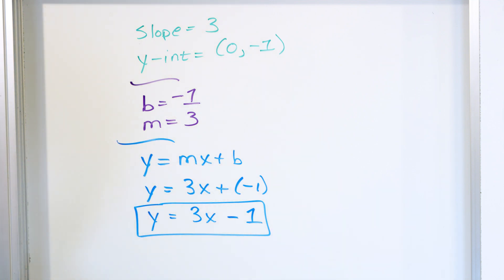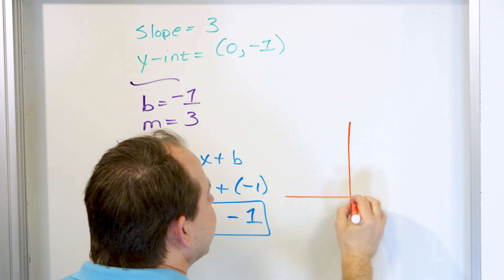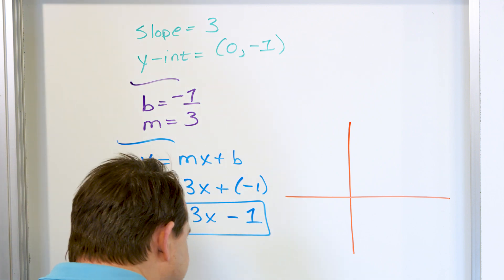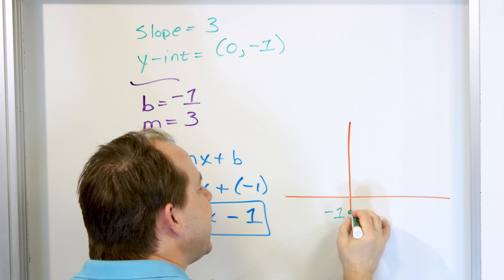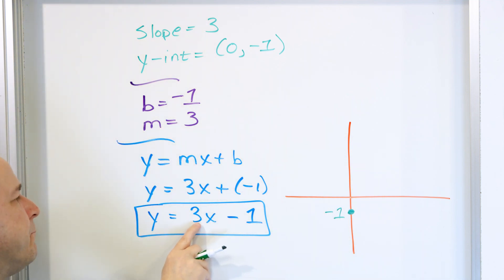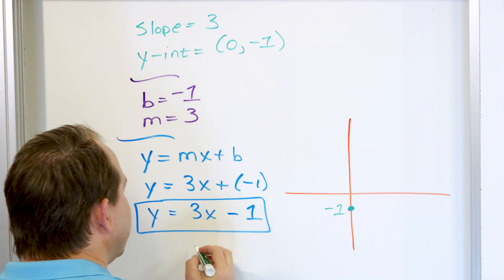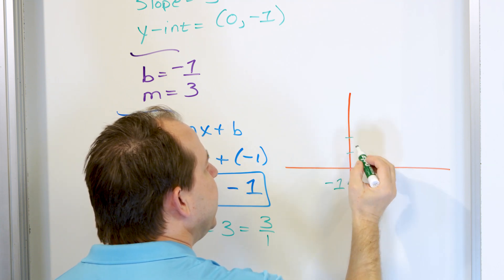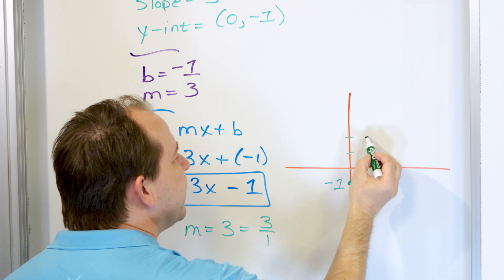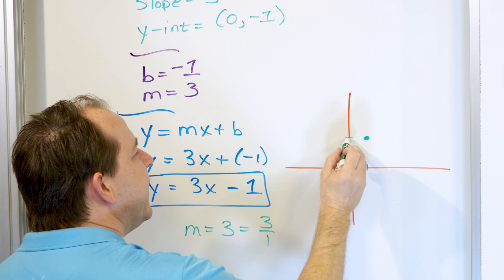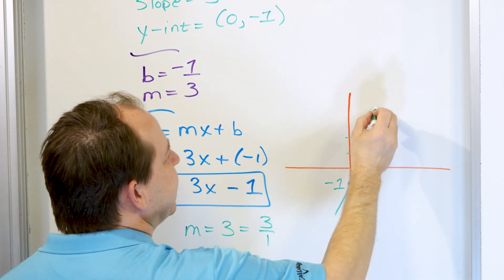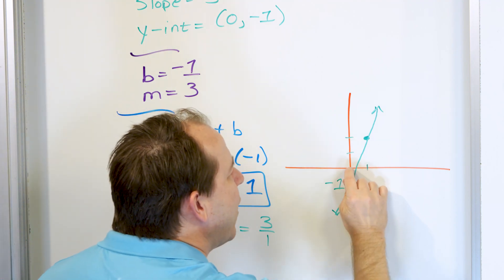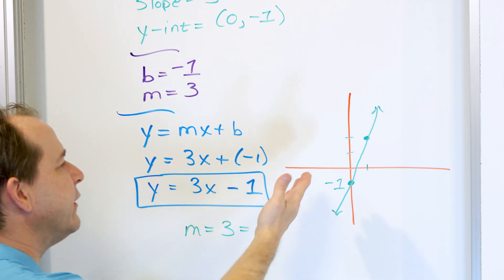What would something like this look like? The y-intercept is negative one — so over here, y equals negative one is where it crosses. The slope is positive three, which means up three over one. So from the y-intercept at negative one, we go up one, two, three and then over one, and the next point on the line would be right there. The y-intercept being negative doesn't really change anything — it just means it crosses down here when the y values are negative.